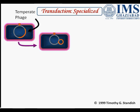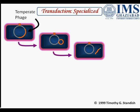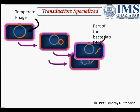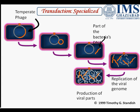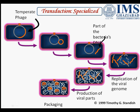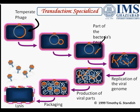In specialized transduction, the virus particle enters and integrates into the bacterial chromosome. It then takes up a part of the bacterial DNA, degrades the remaining DNA, replication occurs, viral parts are produced, packaging takes place, and finally lysis. The key difference between specialized and generalized transduction is that in specialized transduction, the viral chromosome takes up a specific bacterial portion, which can then be transferred to the next generation.